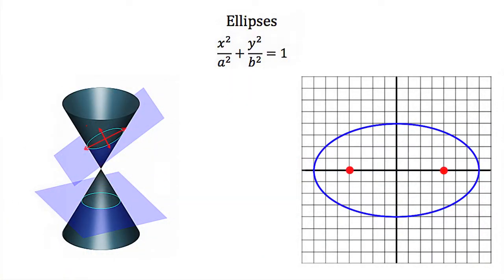If I take my double cone and intersect it with a plane at an angle so when I look down I see an ellipse, and if I imagine a coordinate axis on that ellipse, I could put it on a graph. Like the focus of a parabola, an ellipse has two focuses, or what we call foci. An ellipse is a special shape because every point on it has the same total distance to both foci.